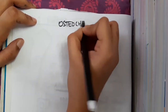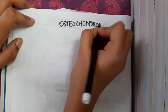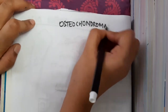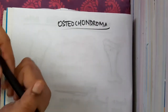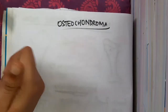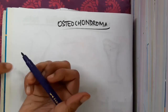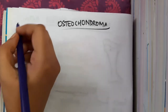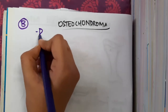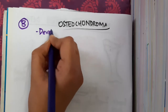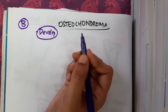What is osteochondroma? This is a cartilage-forming tumor. The cell of origin is cartilage. This is also a benign lesion which is actually a developmental malformation.